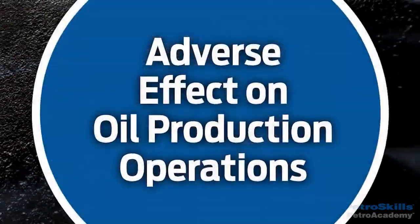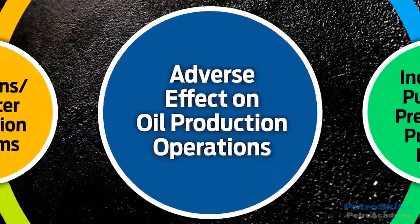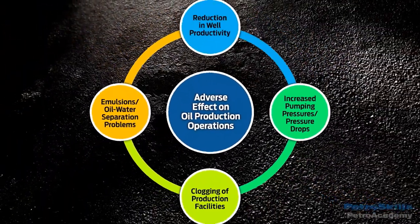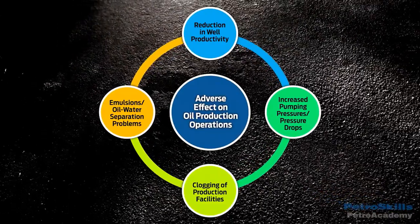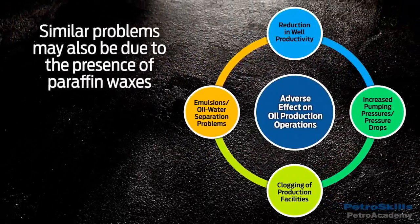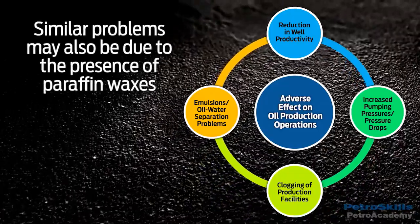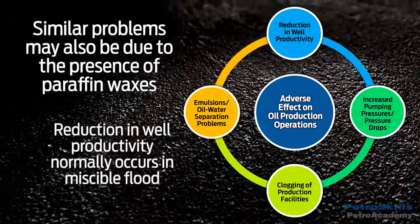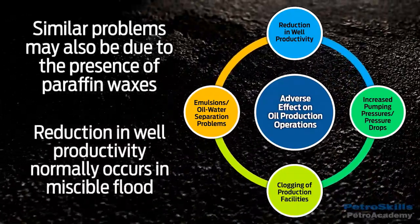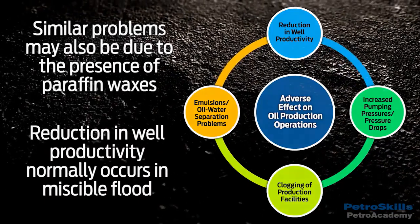The list of adverse effects on oil production operations due to asphaltene precipitation is shown. Similar problems may also be due to the presence of paraffin waxes. Reduction in well productivity normally occurs in miscible flood.